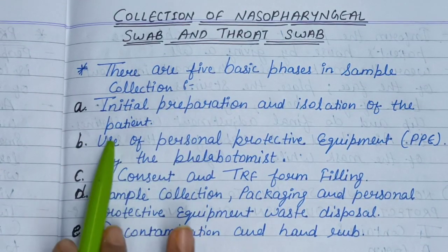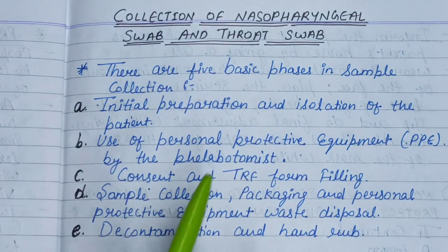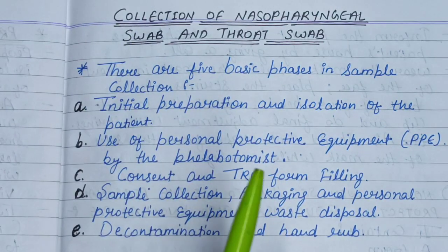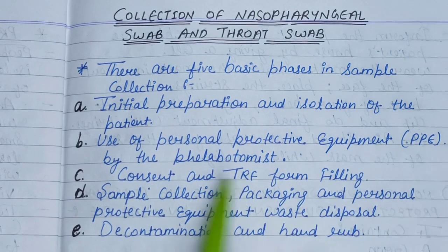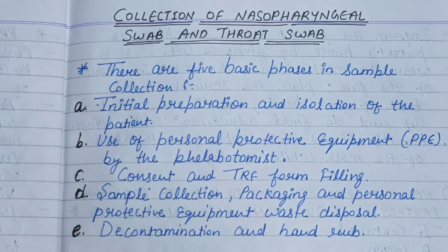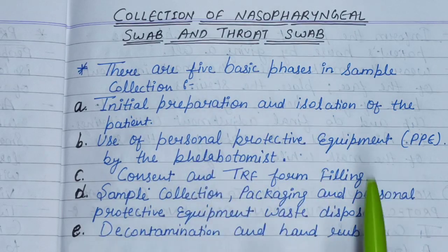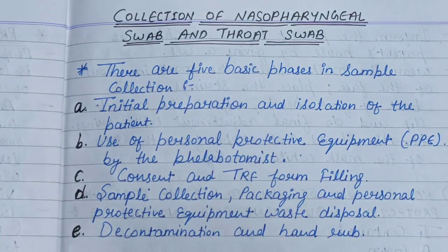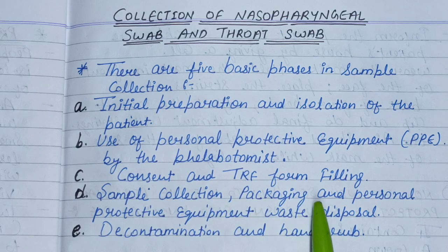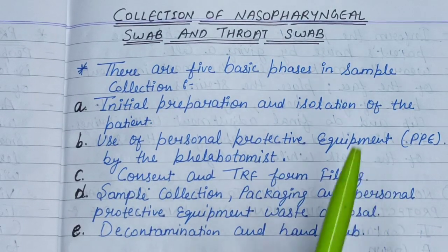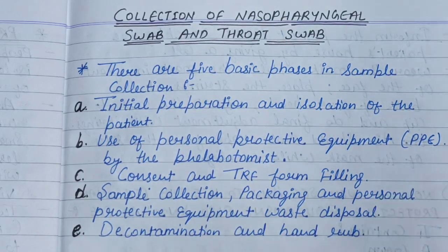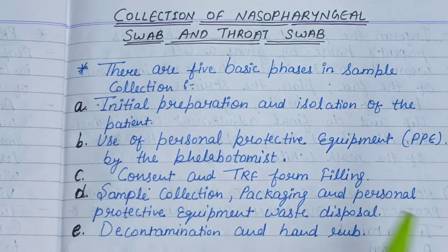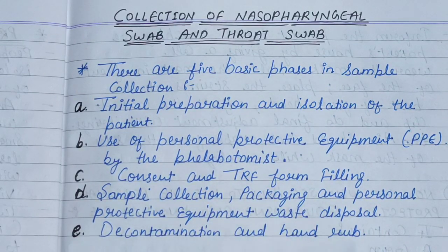There are five basic phases in sample collection. First: initial preparation and isolation of the patient. Second: use of personal protective equipment, PPE, by the phlebotomist. Third: consent and TRF form filling - we will fill the consent form and TRF for the patient's details. Fourth: sample collection. Fifth: packaging. And finally, personal protective equipment removal, waste disposal, decontamination and hand rub.